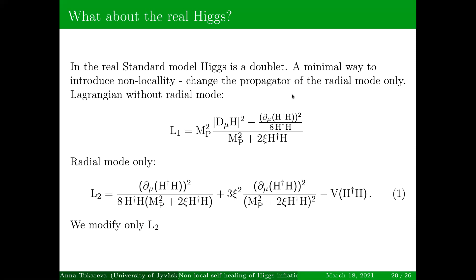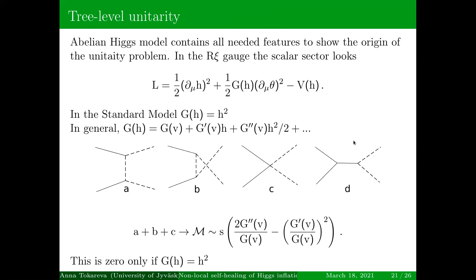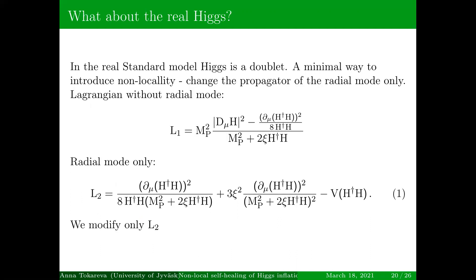H†H is actually R squared if R is the radial mode. This is gauge-dependent. So here I use the gauge in which I see Goldstones but I don't have longitudinal modes of the gauge bosons.